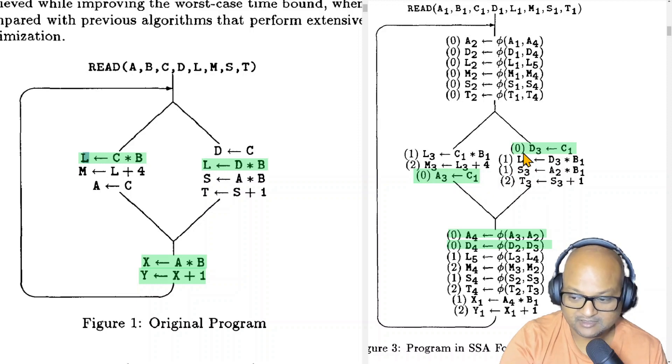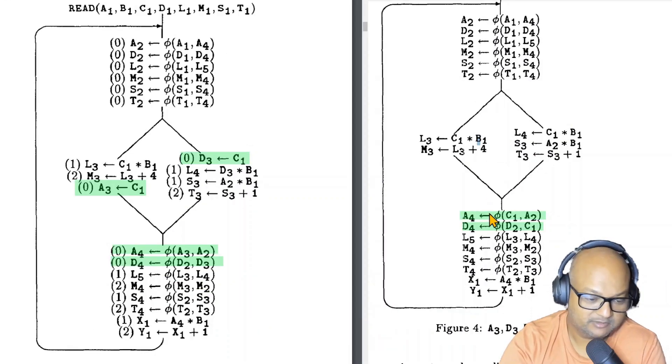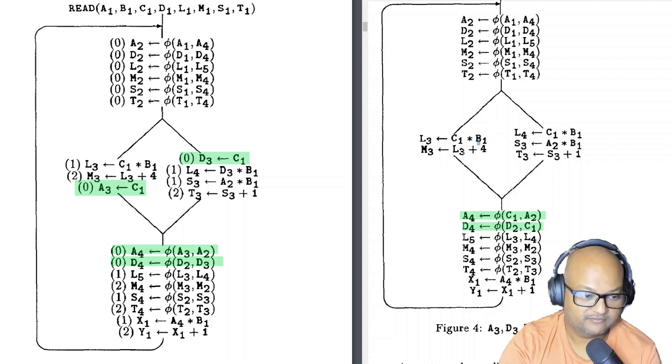And when you have trivial assignments like these you can straight away eliminate them and simply substitute one of these variables for the other one that it was assigned to throughout the entire program. And so that's what we've done in this next iteration. So we see the SSA form from our first iteration on the left and then its next iteration where we have simply removed trivial assignments on the right.